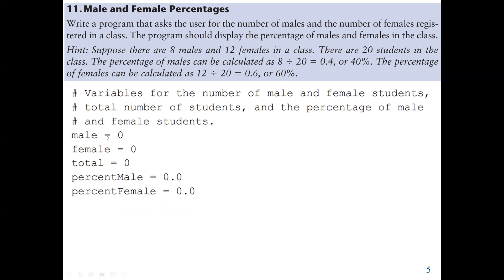Let's start with the solution. First, we have comments noting the variables needed: number of male and female students, total number of students, and the percentage of male and female students. We use integer type for male and female counts because counting people cannot produce a decimal value — any count is a whole number. Then we have variables for total students, percent of male, and percent of female.